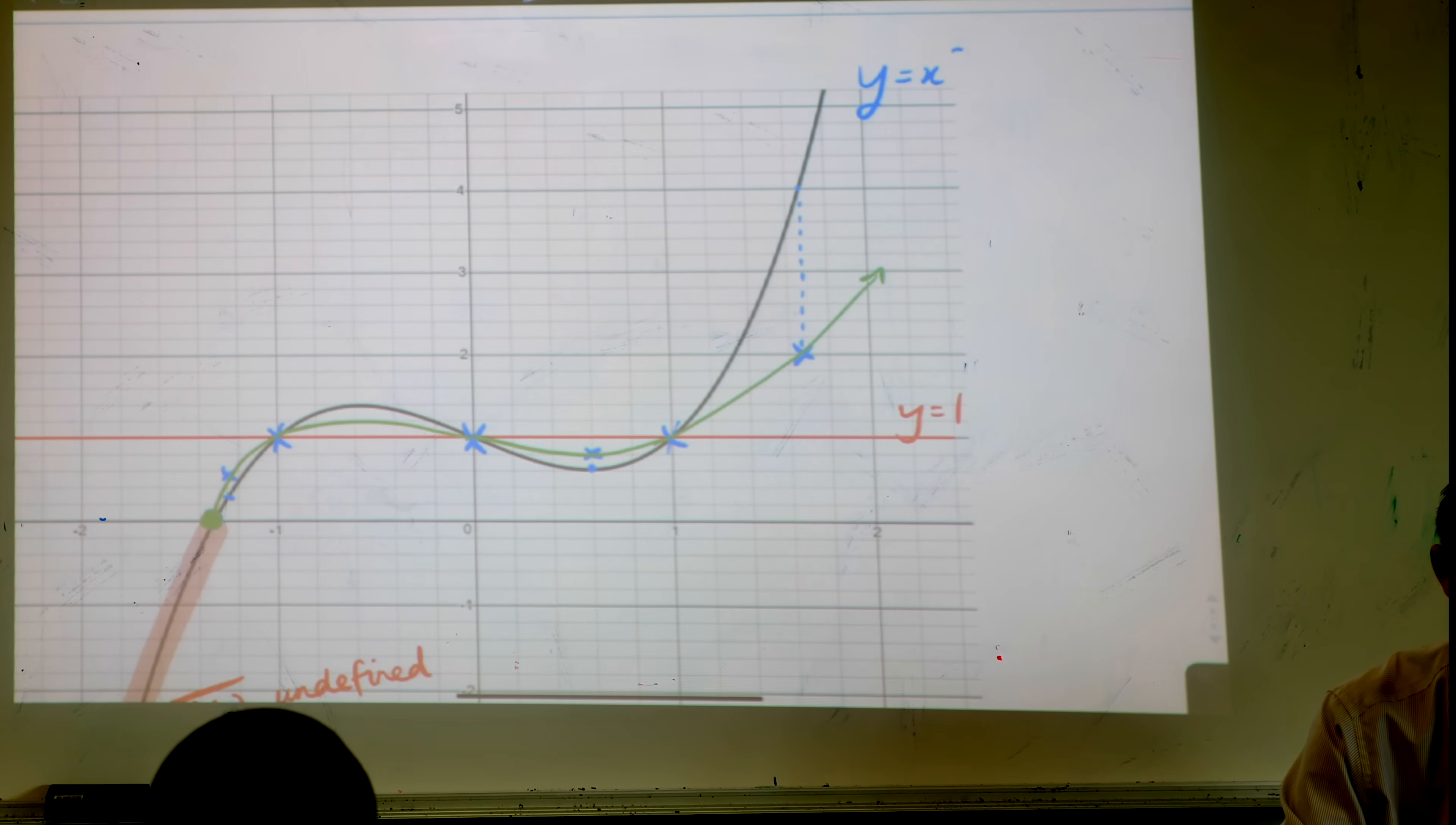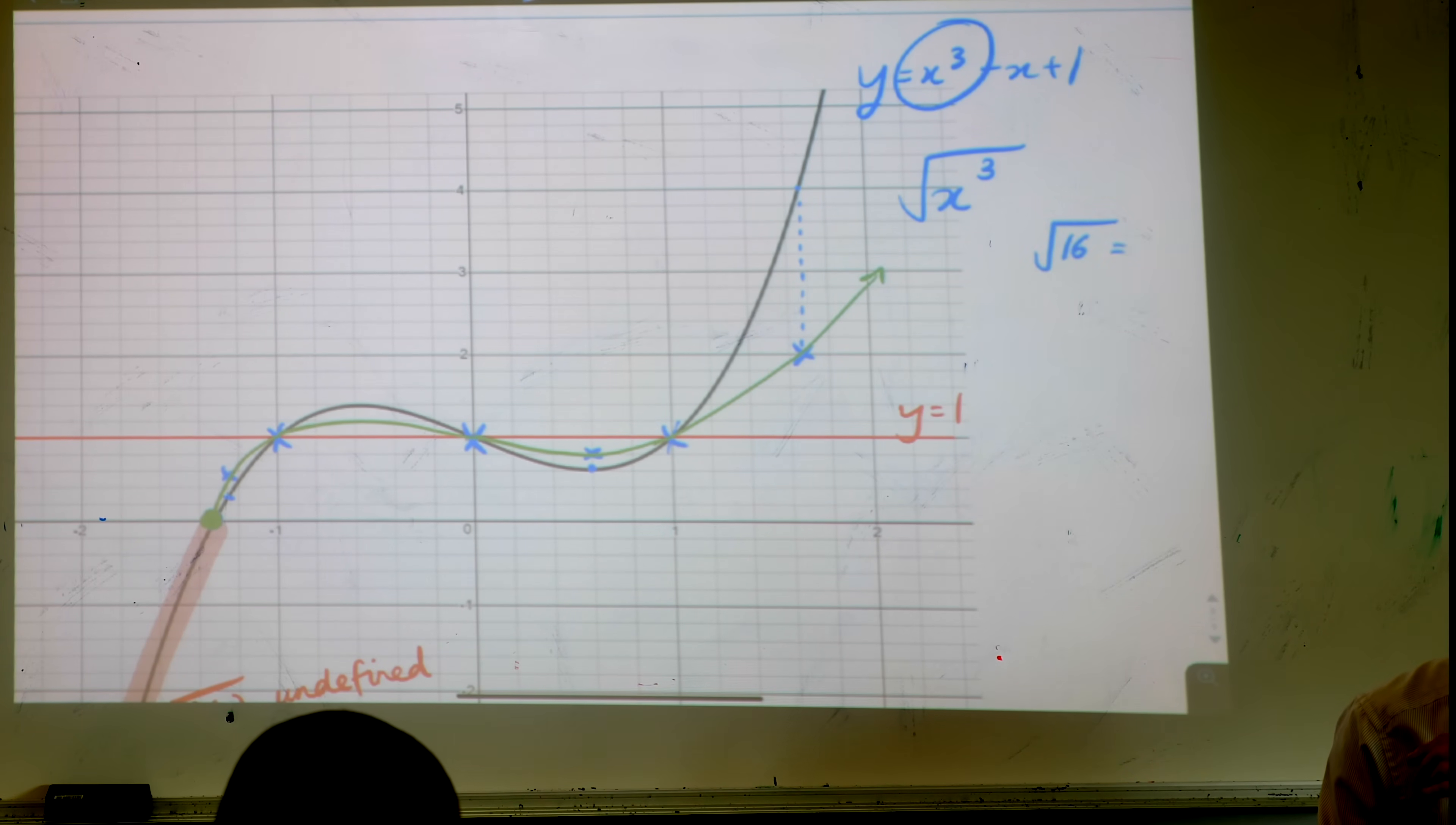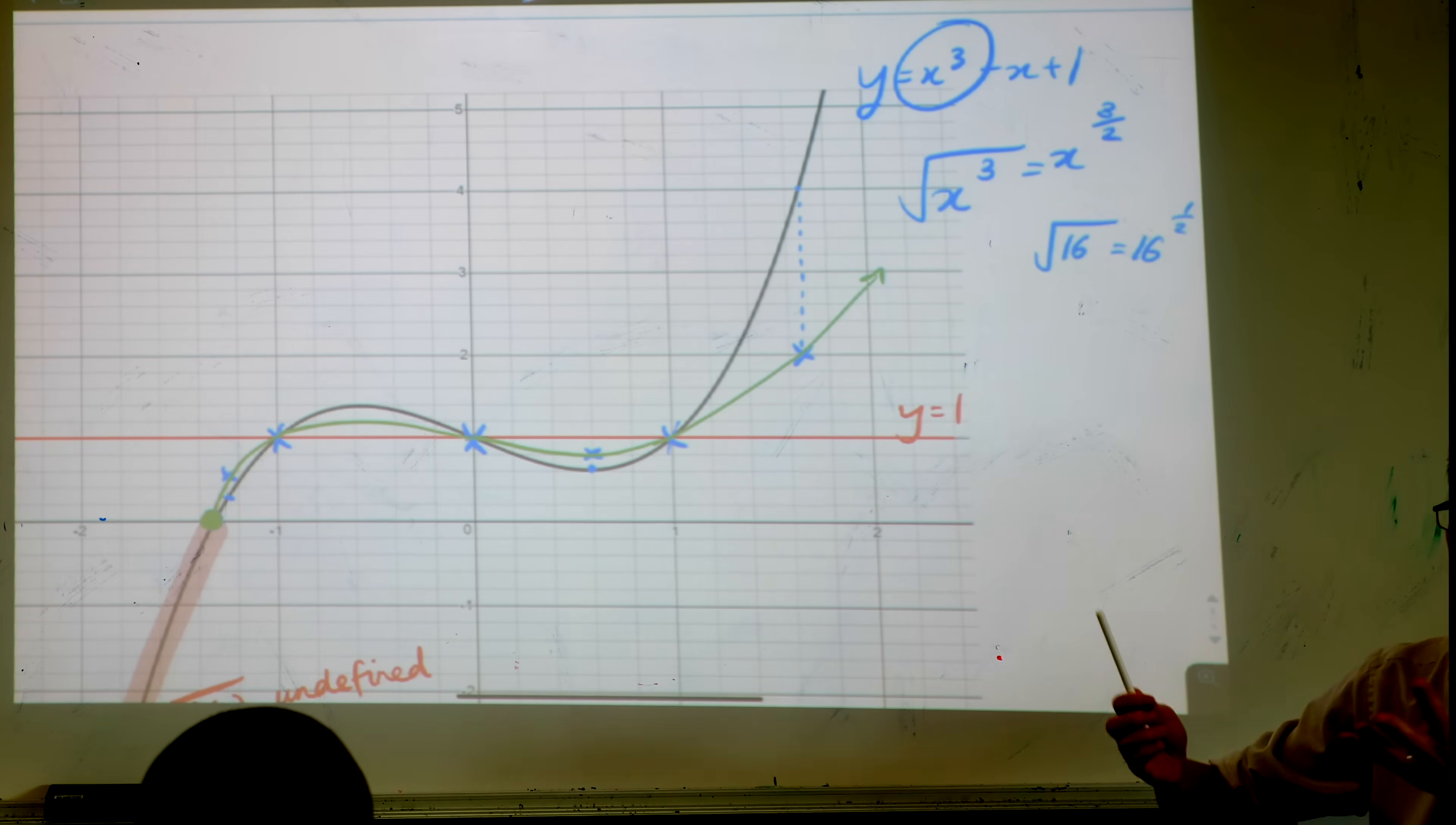y equals x cubed minus x plus one. I'm only telling you that so you can put it into Desmos if you like. When you take the square root of this thing, just look at that first term, the square root of x cubed. What power, what index goes with the square root? Like how could I write the square root of 16 in index notation? It's 16 to the power of, does anyone know? 1 over 2, a half. So the square root of x cubed is x to the power of 3 over 2.